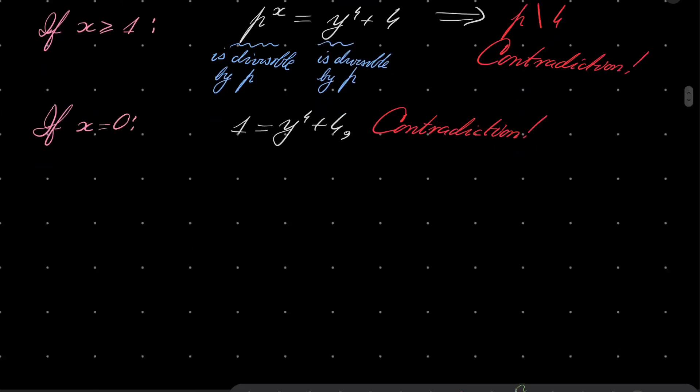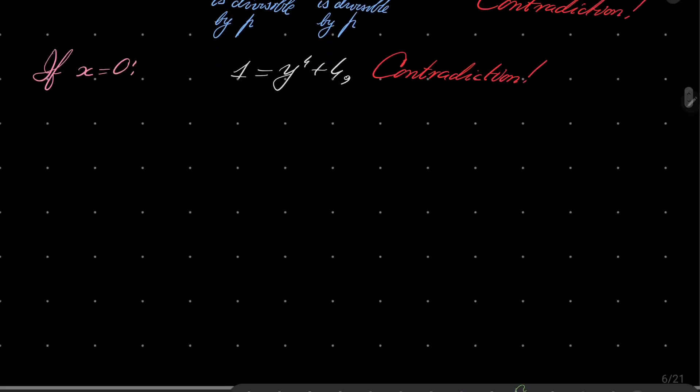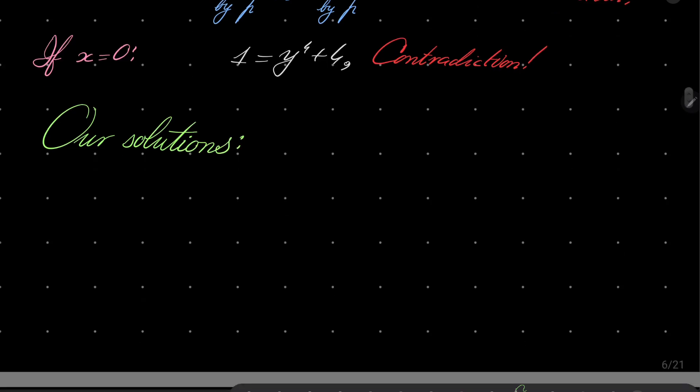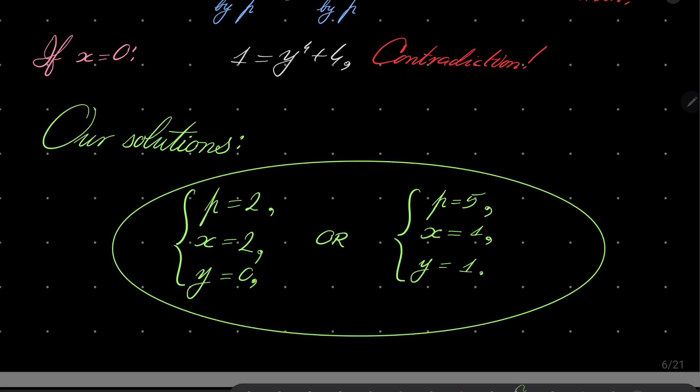So all in all, we have two triples of solutions. Either p is 2, x is 2, y is 0, it was the result of our first case, or p is 5, x is 1, y is 1. It's the result of our second case. And that actually closes our problem.